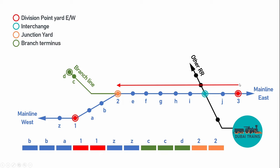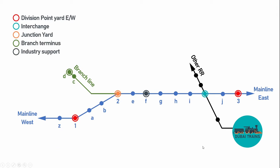Let's zoom in on the junction yard to see exactly what happens. A train comes in from the east from the division point yard, and its cars have different destinations. About half the train — the cars going to B, A1, and Z — are further down the line, so they'll be sorted at yard two and added to the appropriate outbound trains. Another train going up the branch takes the cars for C and D.